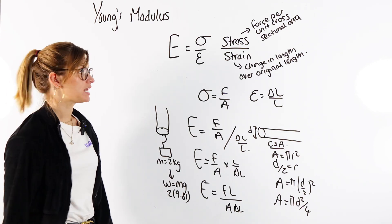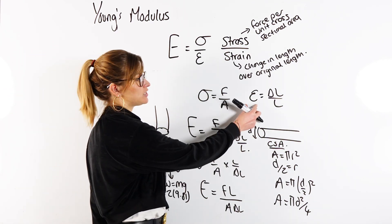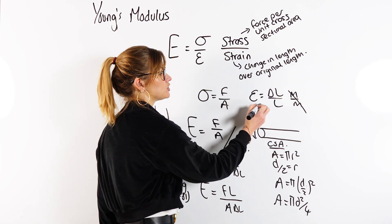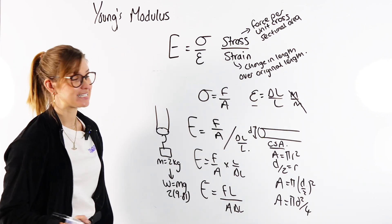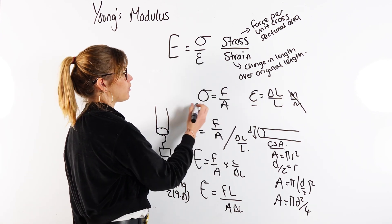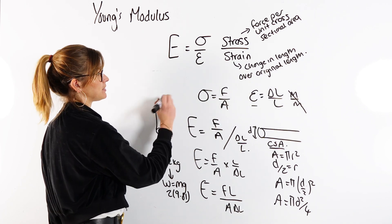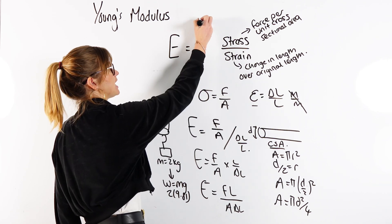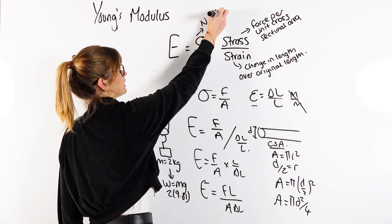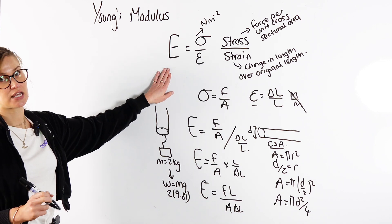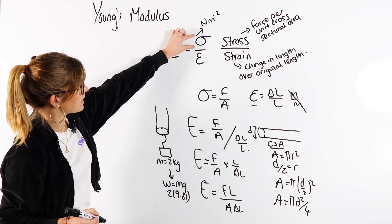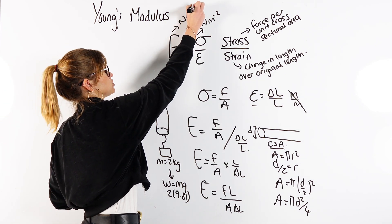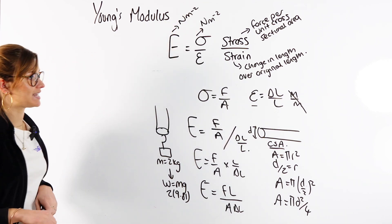Other things you might get asked about are the units. For strain, it's change in length over length — meters over meters — so the units cancel, making strain unitless. Stress is force divided by area, so it's newtons per meter squared. Young's Modulus therefore also has units of newtons per meter squared, because strain is unitless.